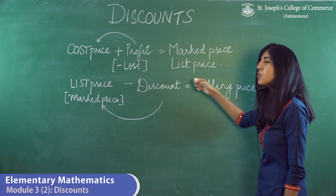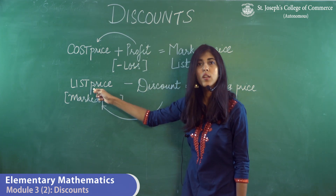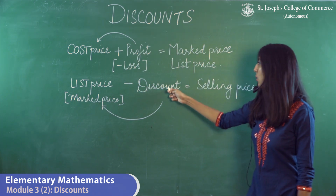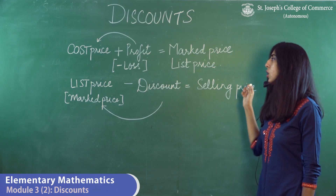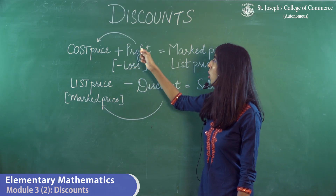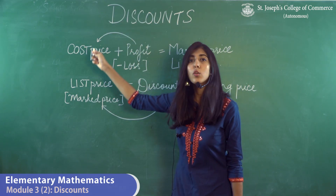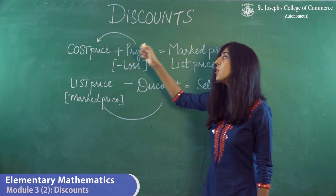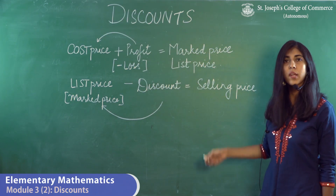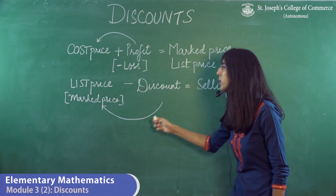The same list price or mark price will be utilized in the second formula. The second formula is: mark or list price minus discount is equal to selling price. Two things to remember: the profit or loss percentage is always calculated on the cost price, and the discount is always on the list price.